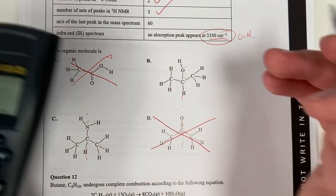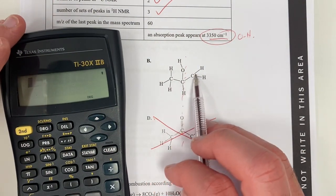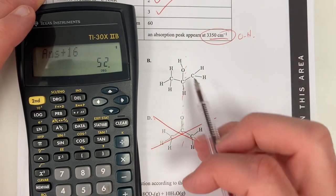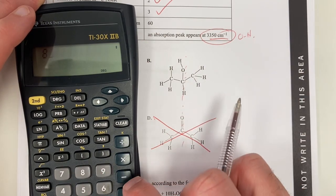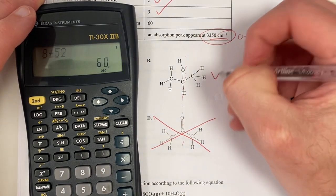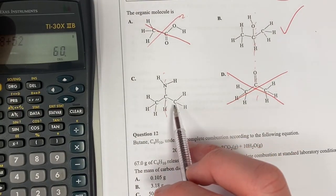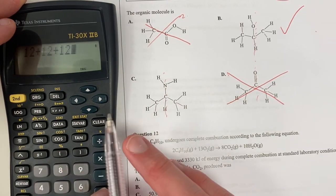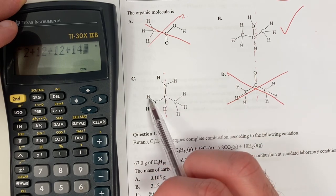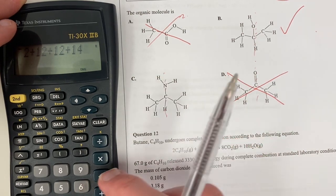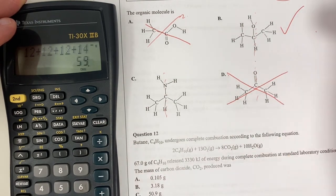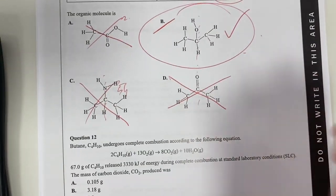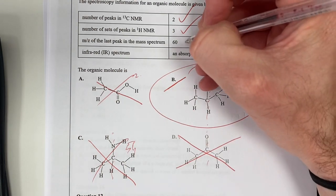Now we're down to these two here. Molar mass of 60. So therefore, let's have a look. C3 is 12 times 3 plus O, which is 16, equals that, plus 1, 2, 3, 4, 5, 6, 7, 8, plus 8, plus 52, I think it was. So that's 60. That's looking good there. What's this guy here? It's going to be different, I think, but let's have a look at it anyway. 12 plus 12 plus 12 plus 14 for our nitrogen. And then 1, 2, 3, 4, 5, 6, 7, 8, 9, plus 9, gives me 59. So therefore, it's not going to be that guy.